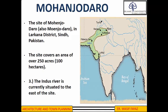If we look at the current site of Mohenjo-daro, it is located in the Larkana district of Sindh, Pakistan. The site covers approximately an area of over 250 acres. The Indus River is currently situated to the east of this site.